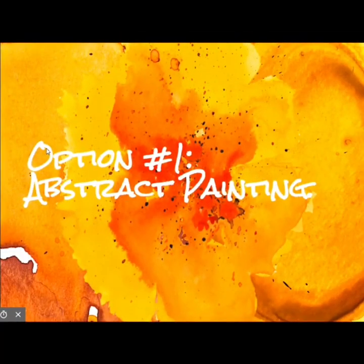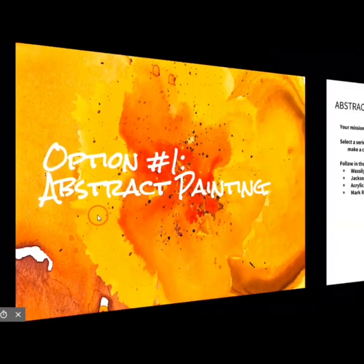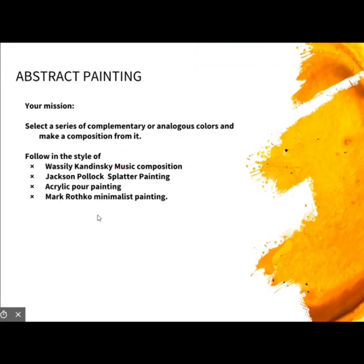Option one is the abstract painting. If you're choosing the abstract painting, your mission is to select a series of complementary or analogous colors — so that's either opposite colors or neighbor colors, remember from what we learned — and make a composition from it. You can do it in a lot of different styles: a Wassily Kandinsky music composition, a splatter painting in the style of Jackson Pollock, an acrylic pour painting, or a Mark Rothko minimalist painting.